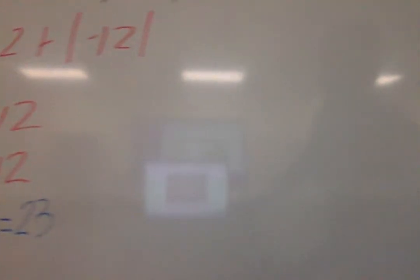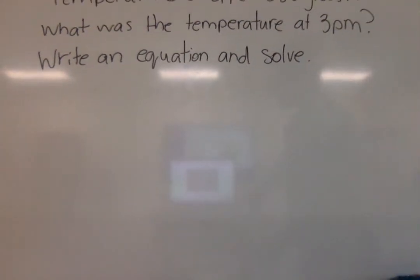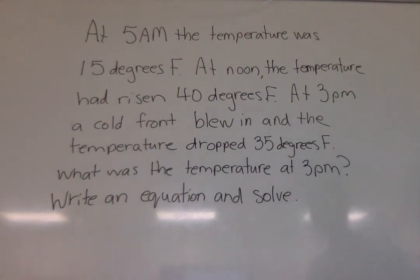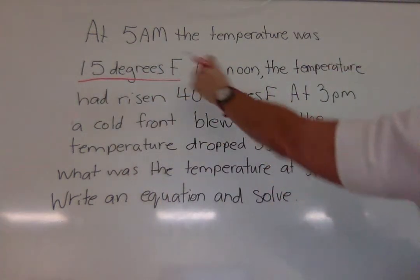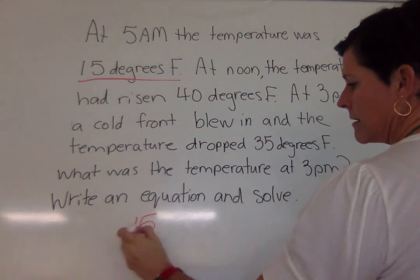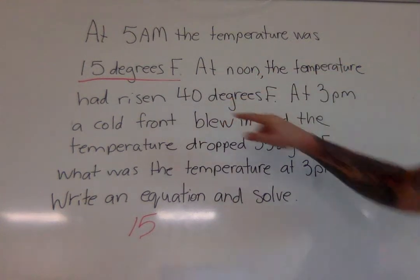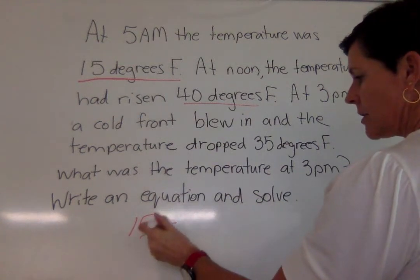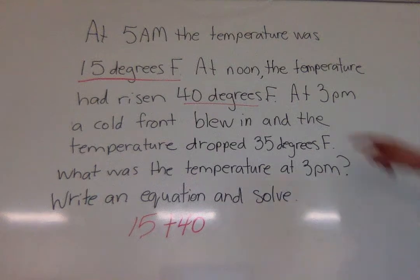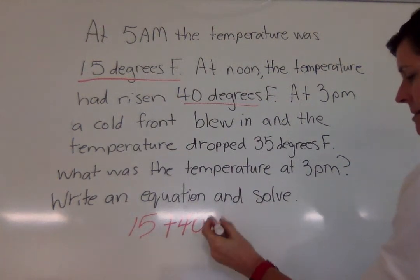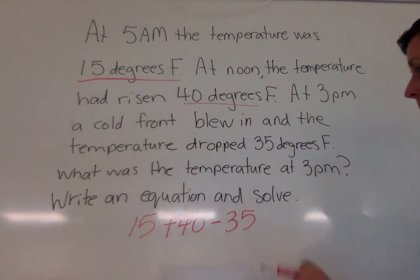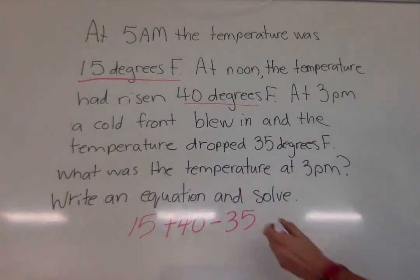And the word problems. On the word problems, I asked you to write an equation and solve. And writing the equation is just what you do so you can solve the problem. So let's read this. At 5 a.m., the temperature was 15 degrees Fahrenheit. 15 degrees, not negative 15, 15 degrees. So I'm going to write that down, 15. At noon, the temperature had risen 40 degrees. So it had risen, that's positive, so that's plus 40. But then at 3 p.m., a cold front blew in, and the temperature dropped 35 degrees. So if the temperature dropped, we're going to subtract it, because that means it went down.